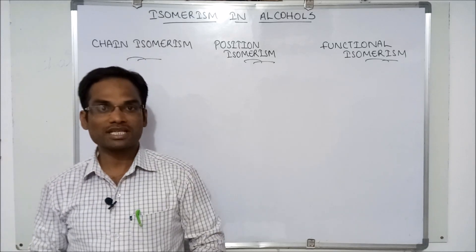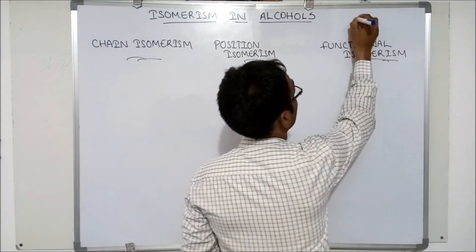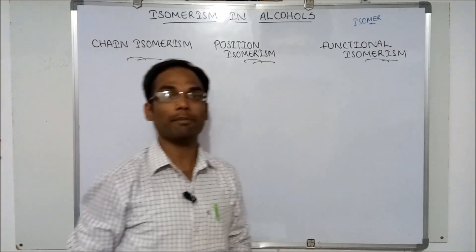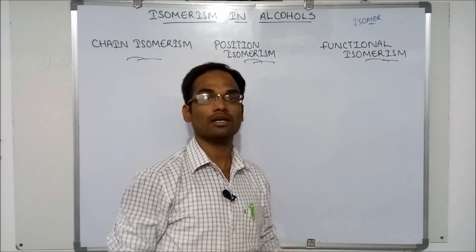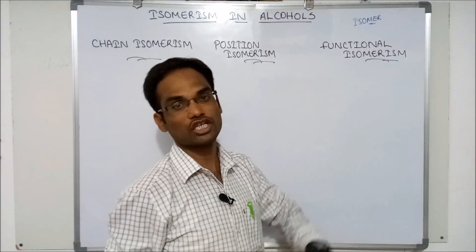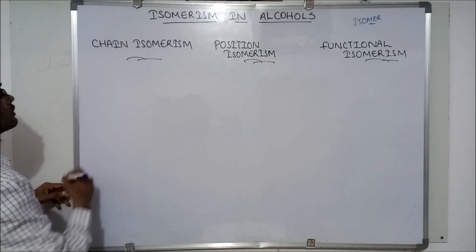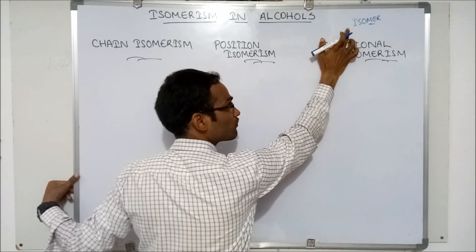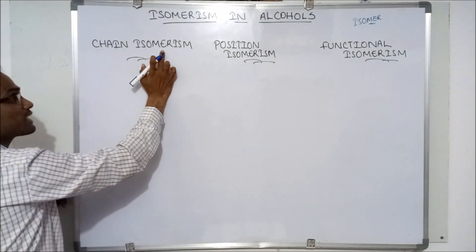Now, let us discuss about isomerism in alcohols. First, what is an isomer? The same molecular formula but different functional group — compounds are known as isomers, and that phenomenon is said as isomerism.